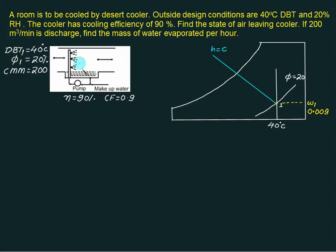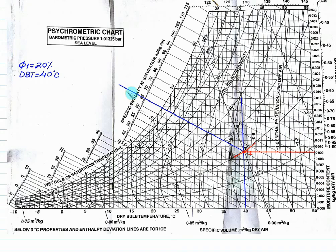The desert cooler process is basically represented as an iso-enthalpic process. So we will move along the constant enthalpy line and we will locate this point here. So constant enthalpy line is this line that is passing through point 1. So this one is enthalpy equals constant. Where this line intersects at this point.